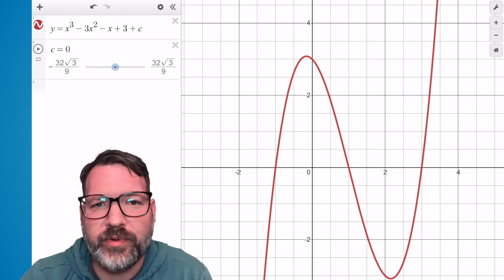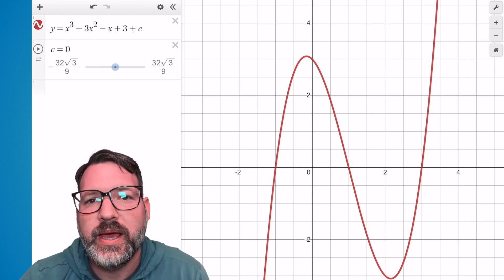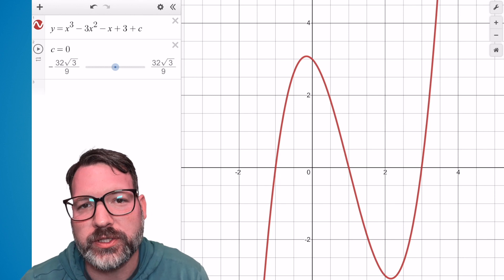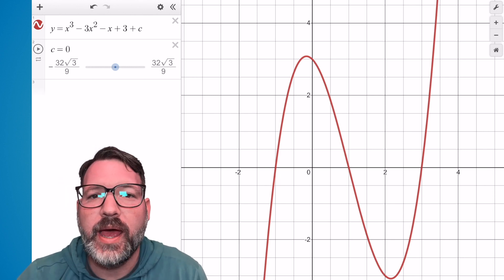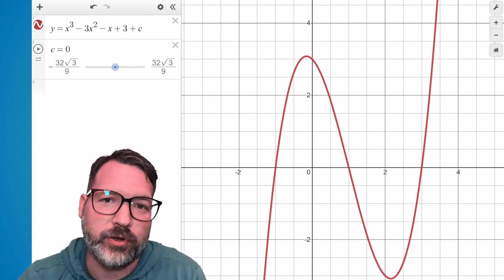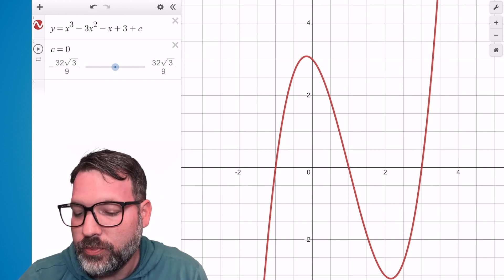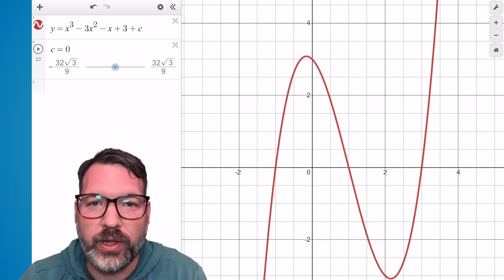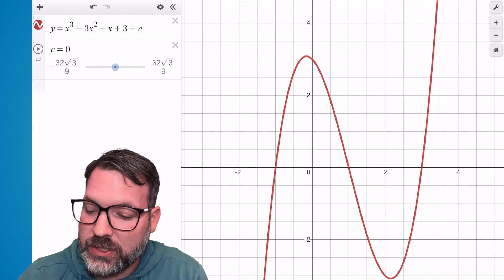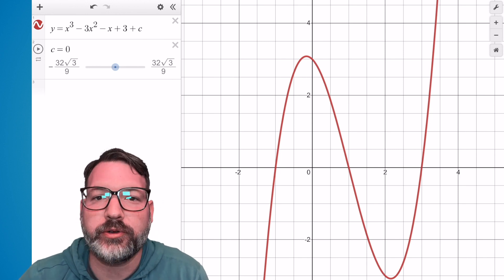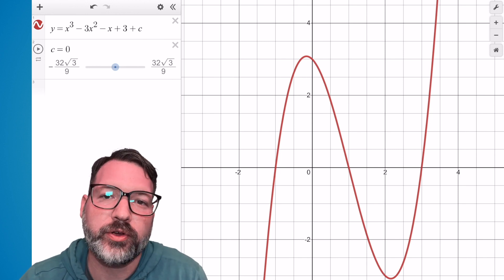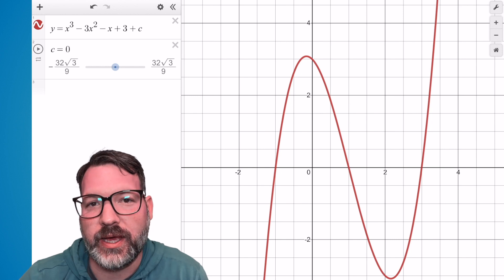So the fundamental theorem of algebra, without diving into the strict definition just yet, is a statement about the connection between what's called the degree of a polynomial and the number of solutions that that polynomial has. I've got right here a cubic function. That is a third degree polynomial. You can see it has three solutions. In eighth grade or ninth grade algebra terms, a solution is where the graph of a polynomial crosses the x-axis.